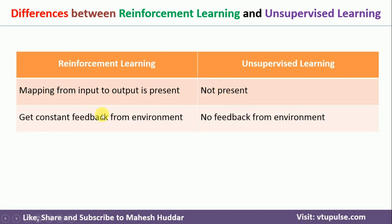In reinforcement learning, we get feedback from the environment. You may not get it immediately, but you will get delayed feedback — when you reach the goal state you get positive feedback, and if you reach a danger state you get negative feedback. But in unsupervised learning, we never get feedback from the environment. We have to consider the inherent properties of the dataset and create clusters based on those patterns. So there is no feedback from the environment in unsupervised learning.